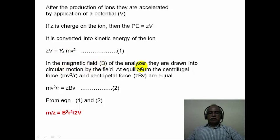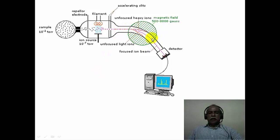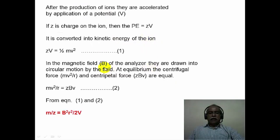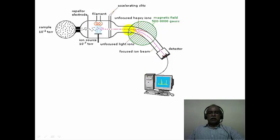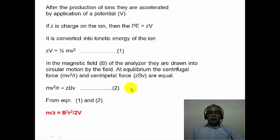In the magnetic field of the analyzer, ions are drawn into a circular motion — they take a curvature whose radius depends on the mass-to-charge ratio of the ion. At equilibrium, the centrifugal force and the centripetal forces acting on the ion are equal. The centrifugal force is mv²/r, where r is the radius of curvature, and the centripetal force is ZBv — the charge times the magnetic field strength times the velocity of the ion. When these two forces match, they are equal as represented in equation 2.